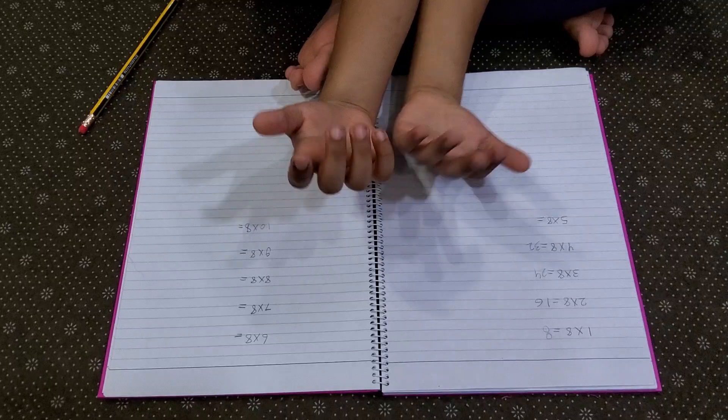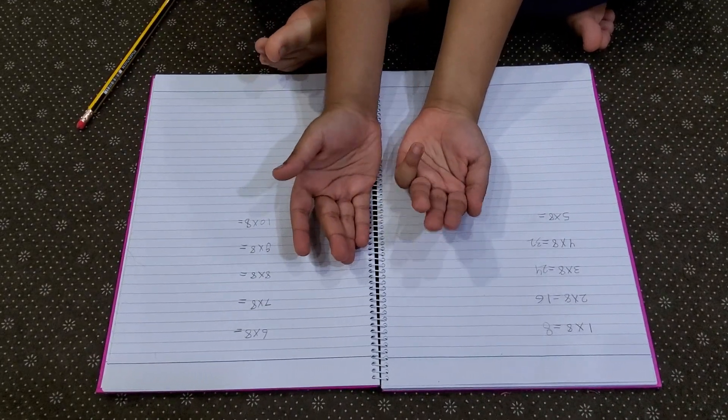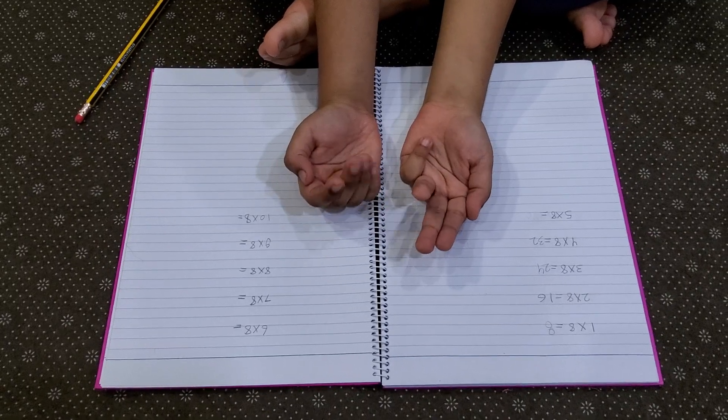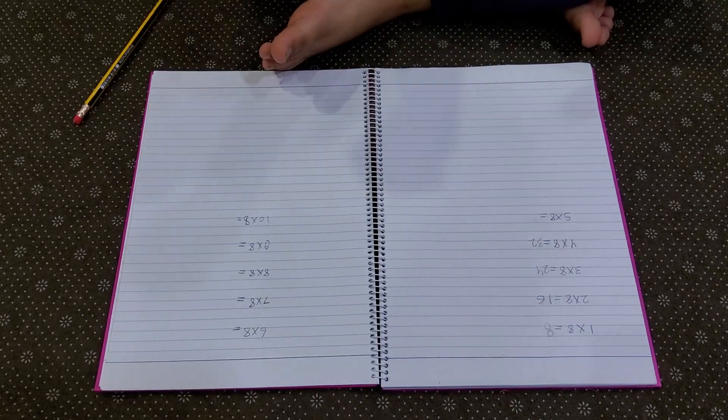So five multiplied by eight. So we bend number five and five fingers after it. So it's going to be forty. This is zero.